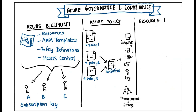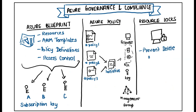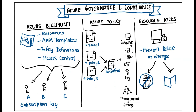The last is Resource Lock. It prevents resources from being accidentally deleted or changed. It can be applied to individual resources, groups, and entire subscriptions. It prevents delete or change. These are managed from the Azure portal, PowerShell, and CLI. It comes with two types: Delete and Read Only.